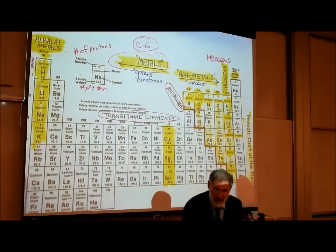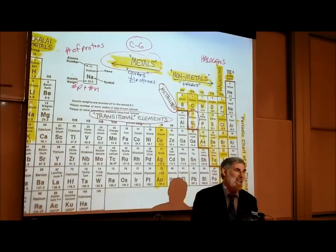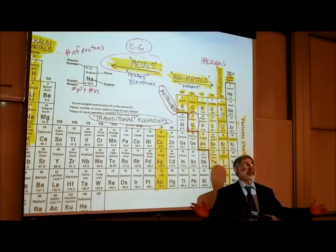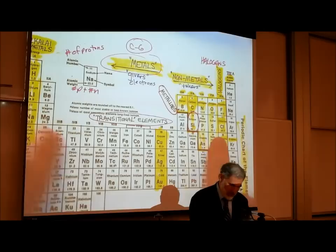The noble gases — the elements way over on the right — don't give and don't take. That's why they're called noble gases: they don't have to, they don't need anybody. They already have what they want. These others do tend to react.